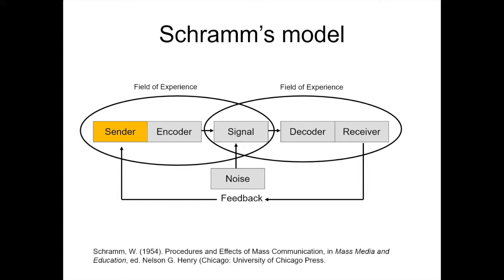Communication starts with the sender — that is the person who initiates the communication. In this case, that's me. I am encoding the communication into spoken and written English with some visual signals. Encoding means that it gets encoded into some format to be transmitted as a signal. That signal is going to be received by the receiver — that's you — but in order to receive it, you have to decode it, which means you have to be able to understand written and spoken English and understand these visuals as they are presented to you.